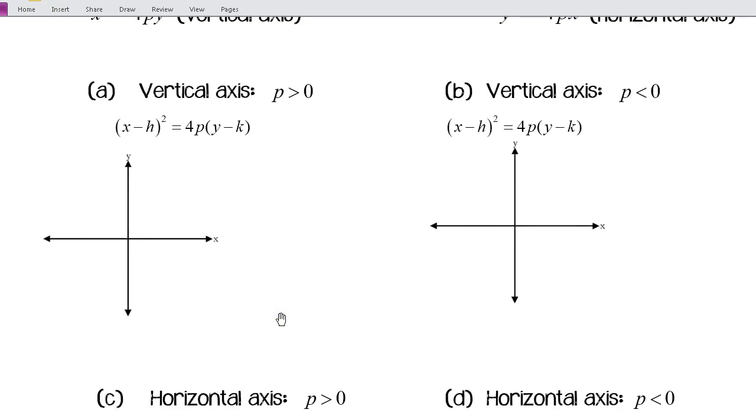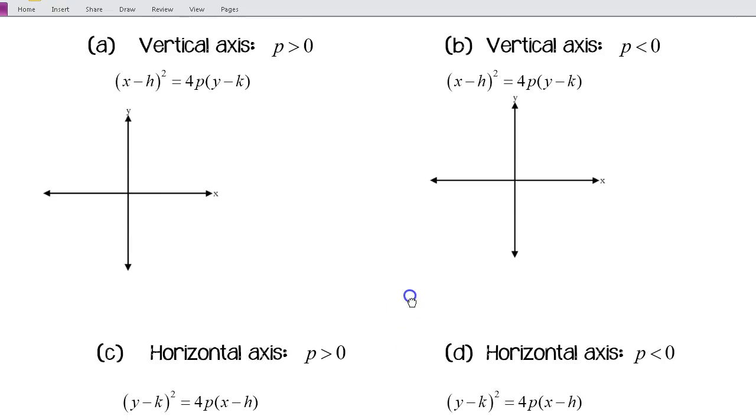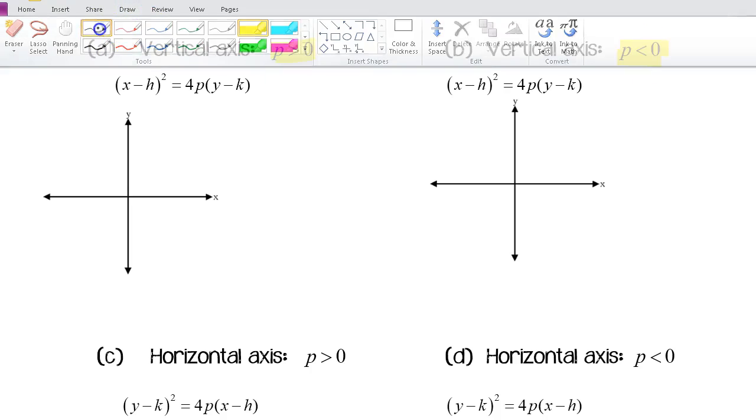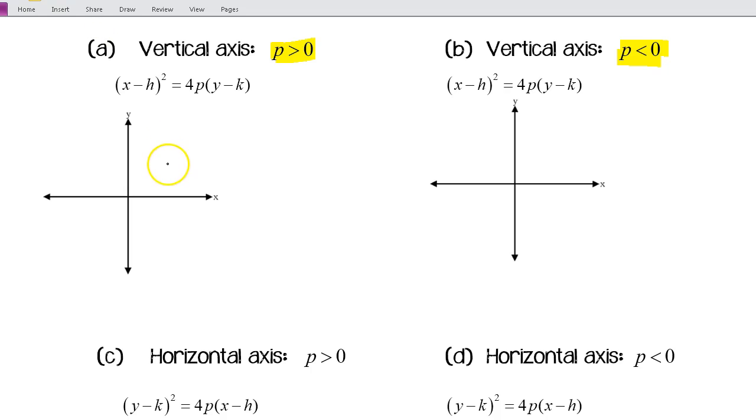Here are our two cases: vertical axis and horizontal axis. This is for p is greater than 0, and this is for p is less than 0. I'm going to pick any vertex here and just sketch in a parabola. We've got my axis of symmetry. My focus will be inside the parabola somewhere. That same distance away from the vertex on the other side will be my directrix. There we have all our parts: focus, vertex, directrix, axis of symmetry.